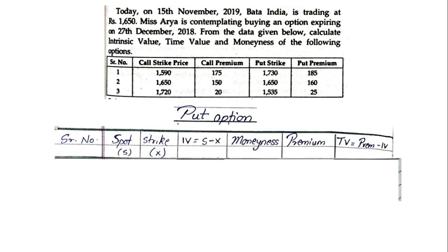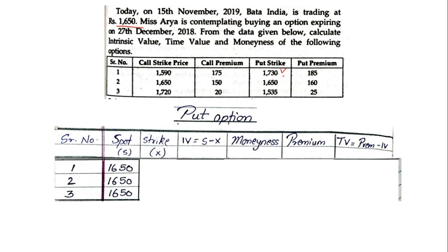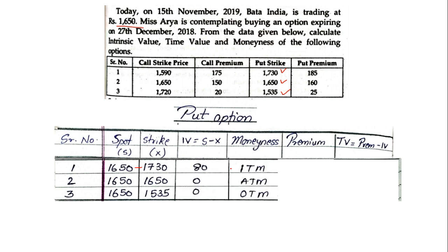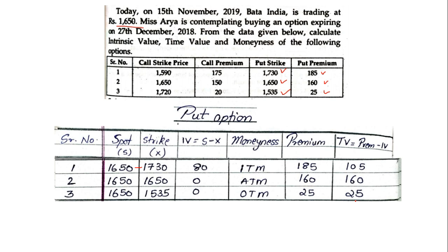Under put option, same format. Serial numbers same, spot is 1650 in all cases. Strike prices are 1730, 1650, and 1535. Again, for put option when spot is less than strike it's positive; when equal, zero; when spot is more than strike it's negative so IV is zero. IV values: positive 80, zero, zero. Moneyness: ITM, ATM, OTM. Premiums given are 185, 160, and 25. Time value: 185 minus 80 equals 105; 160 minus 0 equals 160; 25 minus 0 equals 25.